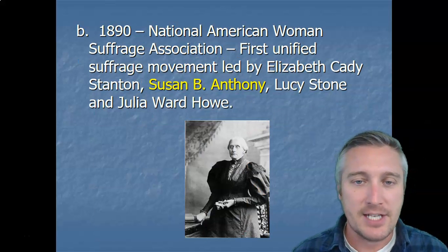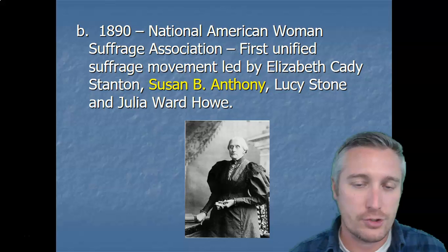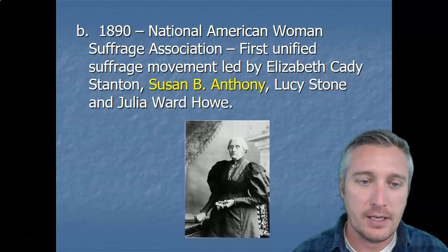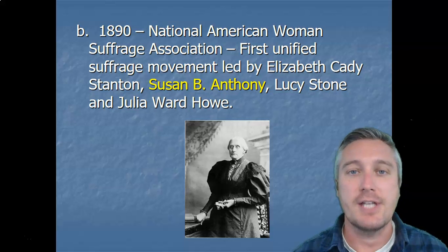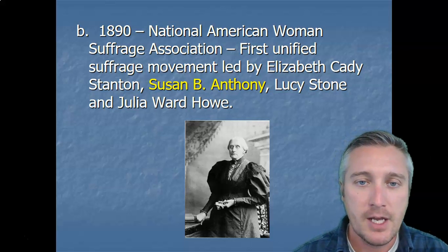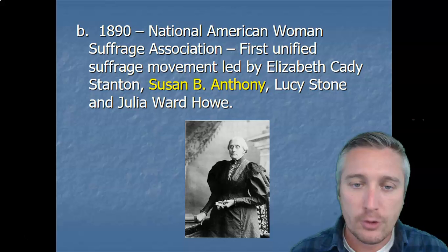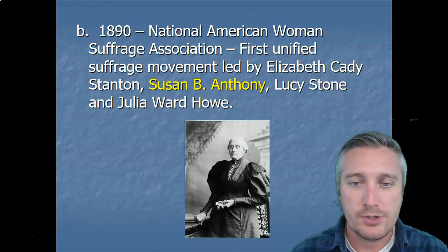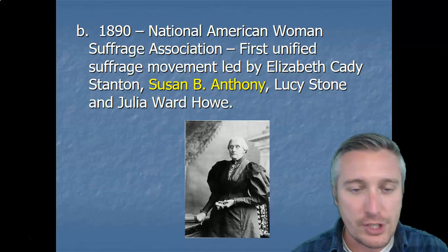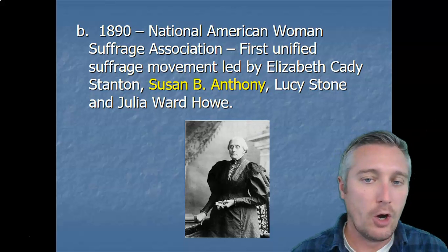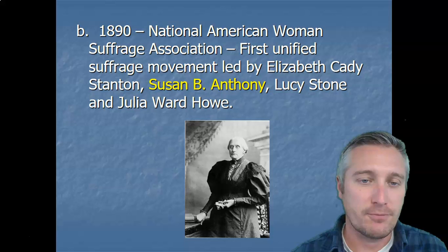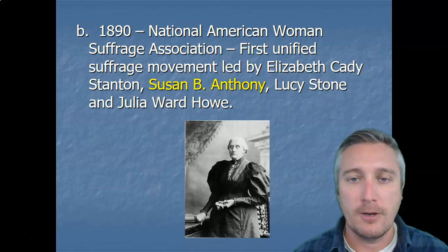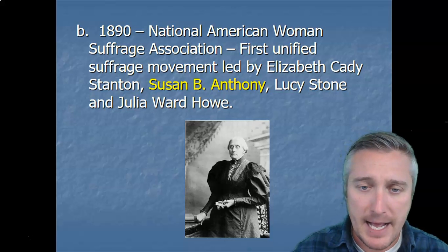In 1890, the National American Women Suffrage Association — NAWSA — was first organized, once again by Elizabeth Cady Stanton, who was still alive and helped get this movement going. The woman pictured here is Susan B. Anthony, who is also commemorated on certain U.S. coins. Also prominent were Lucy Stone and Julia Ward Howe. All of these women were the leading suffragists who applied the pressure on politicians to get this law passed.